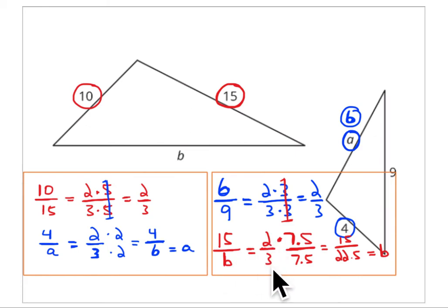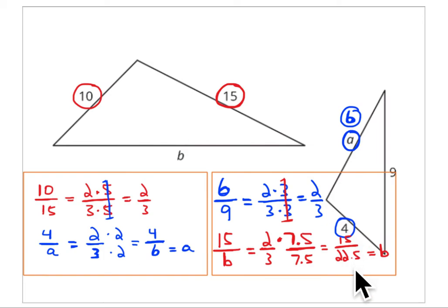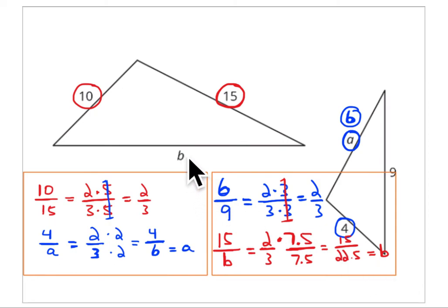So how do you deal with that? 15 is 2 times what value? 15 divided by 2 is 7.5. That means B is going to be 3 of those 7.5s. So 3 times 7.5 is 22.5. The ratio is 15 to 22.5 — 15 is 2 times 7.5 and 22.5 is 3 times 7.5. It's a little bit harder because you're dealing with a decimal value. So the length of B is 22.5.